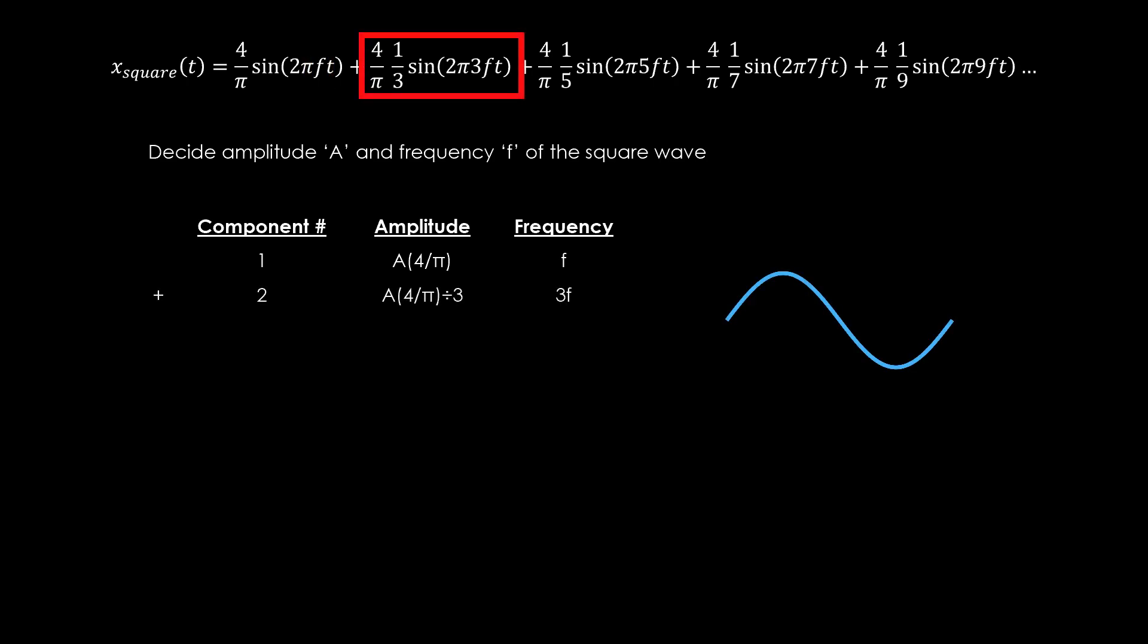Then, we add the second component, which is going to have an amplitude a times 4 over pi, divided by 3, and frequency 3f. Since we are adding a small trough to a large crest, the result will have a small cavity in its crest.